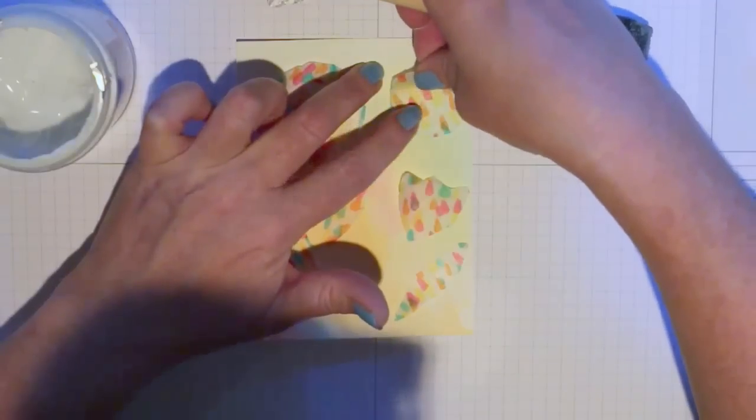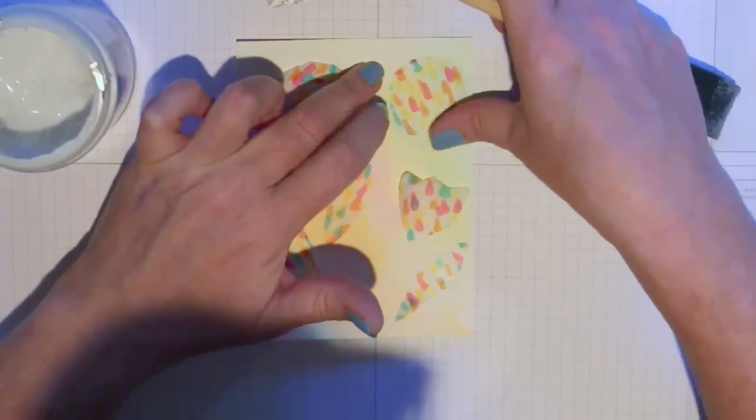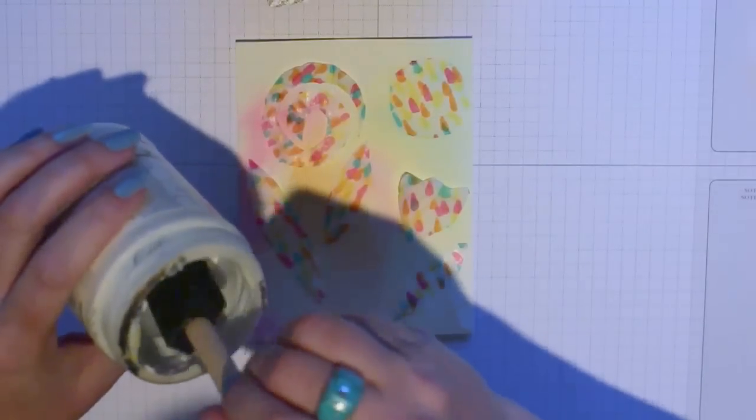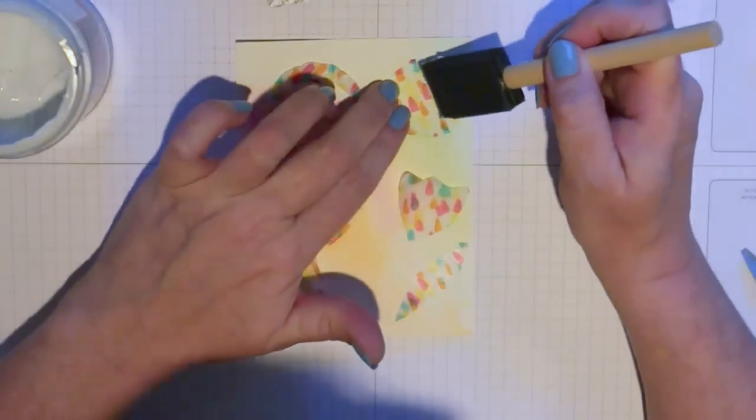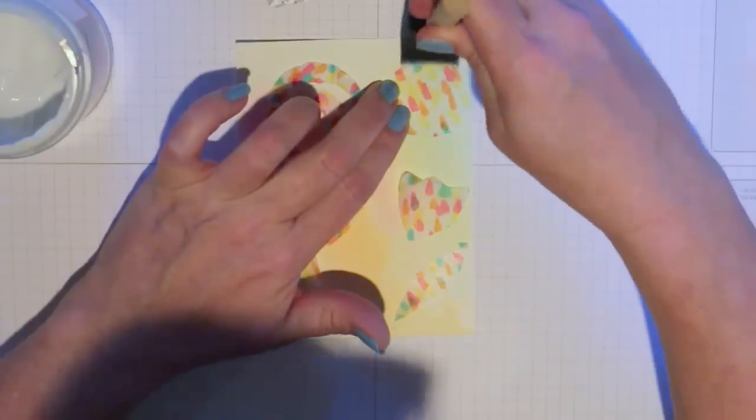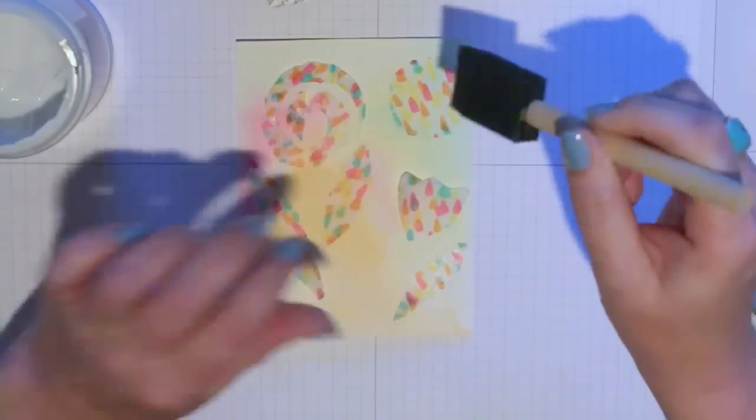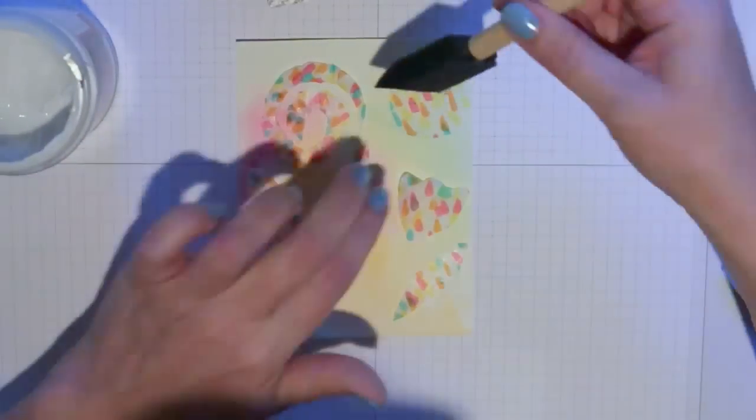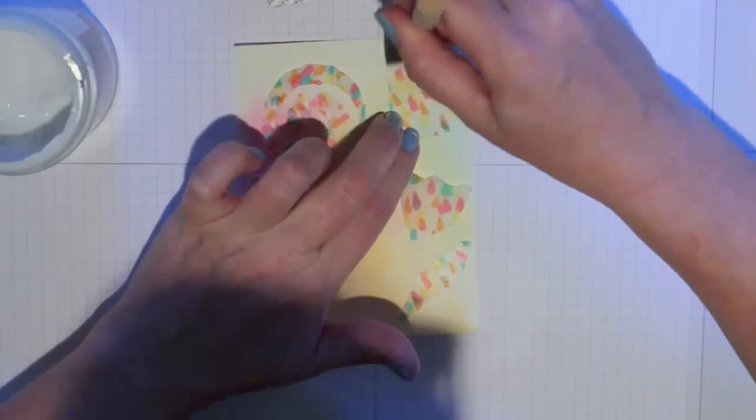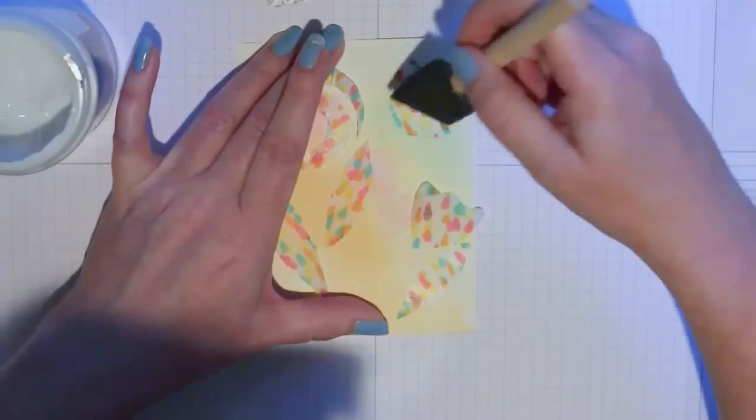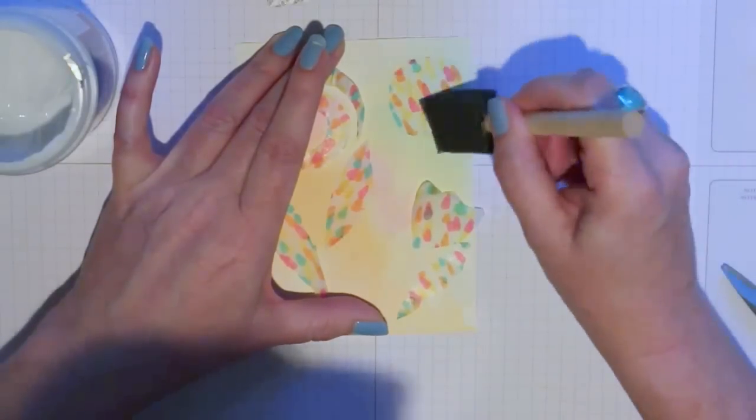That helps you make sure that your tissue paper doesn't buckle. So the first step is just to put a little bit down in a bigger area than your tissue paper will take up, and then put the tissue paper down and rub it with your fingers to make sure that you've gotten all the wrinkles out. That's a really important step. This has kind of a thicker body, this gel, and that helps it also not buckle.